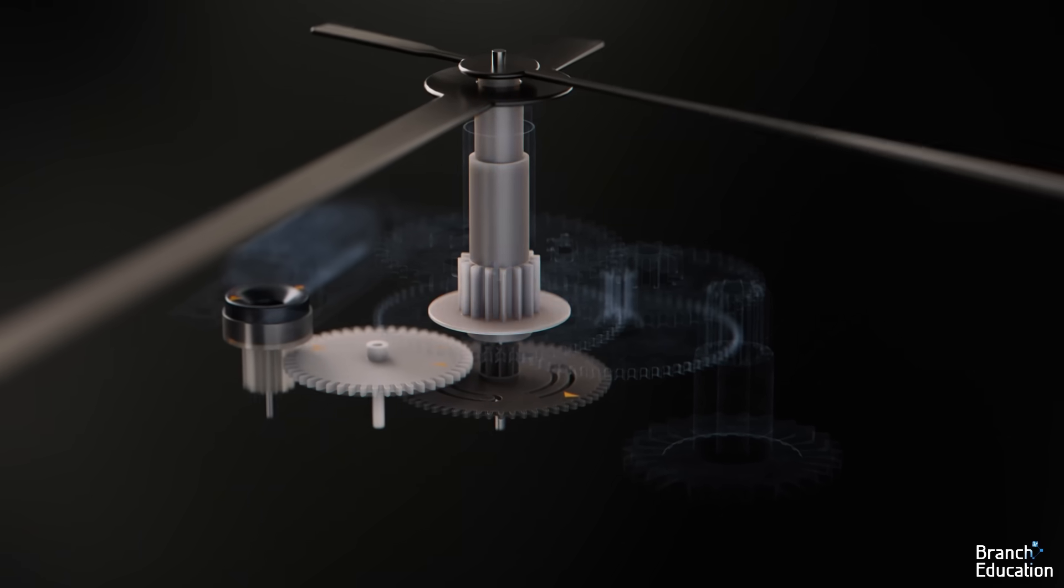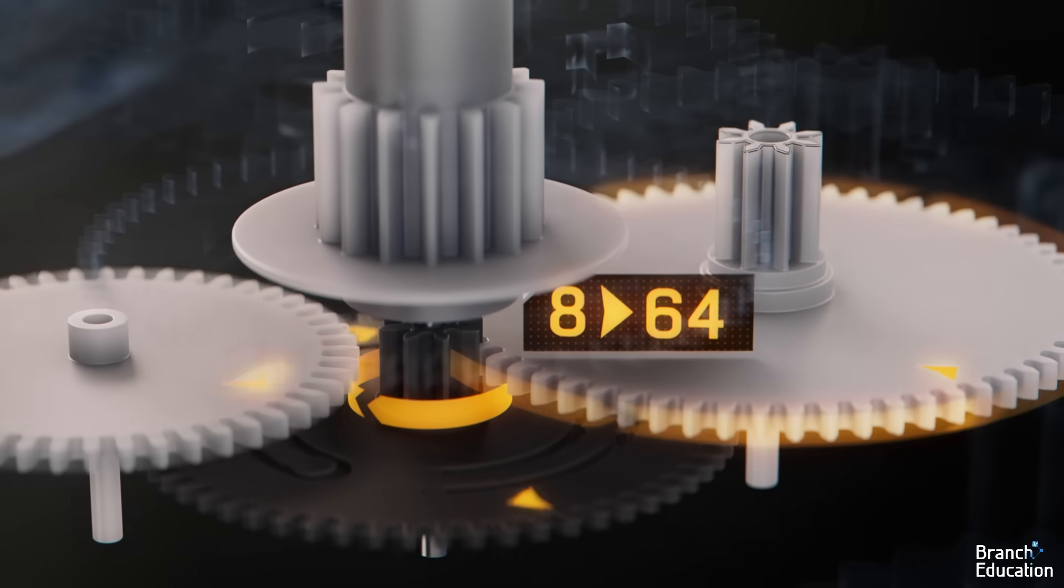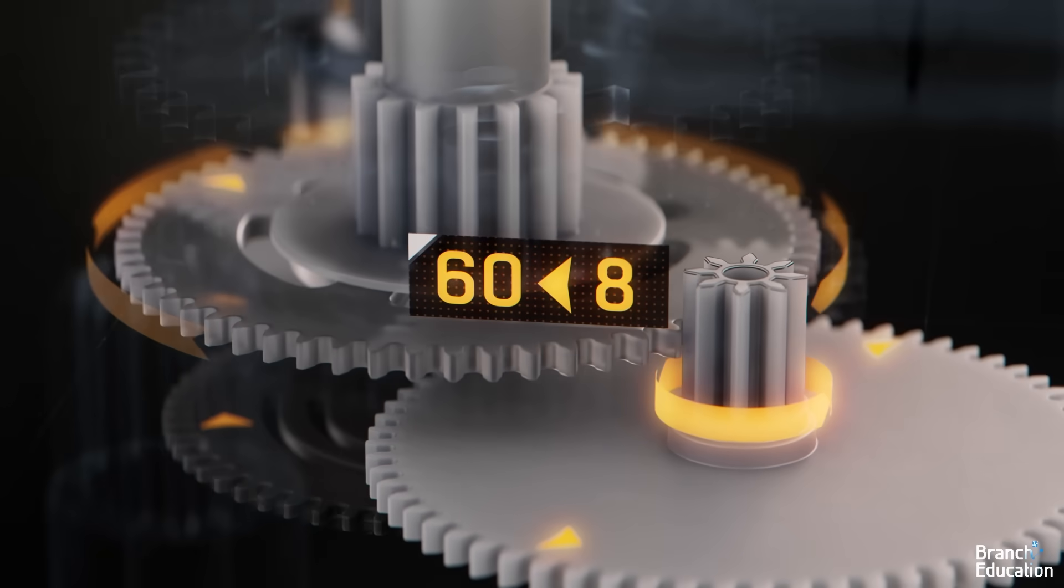The minute hand is also mounted on a shaft through the center and is driven through an 8 to 64 gear reduction to the idler, followed by 8 to 60 to the minute hand.